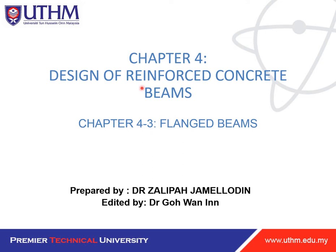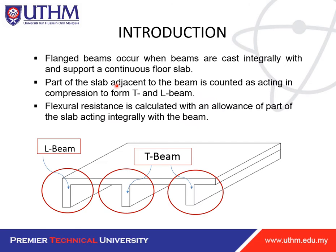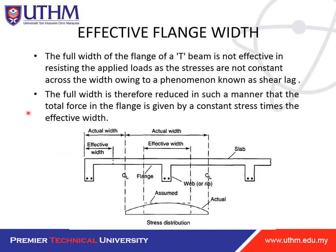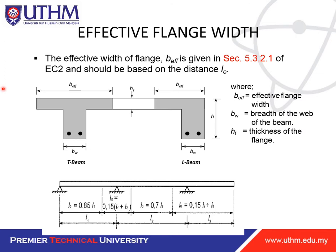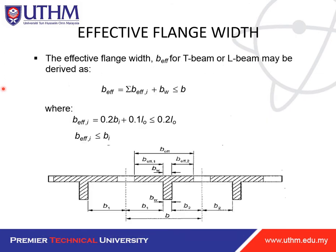Today I'm going to present Chapter 4: Design of Reinforced Concrete. We'll look at flange beams and the effective flange width. The effective flange width b_eff for a T-beam and L-beam can be derived as: b_eff equals the sum of b_eff_i plus b_w, which must be less than the original b.